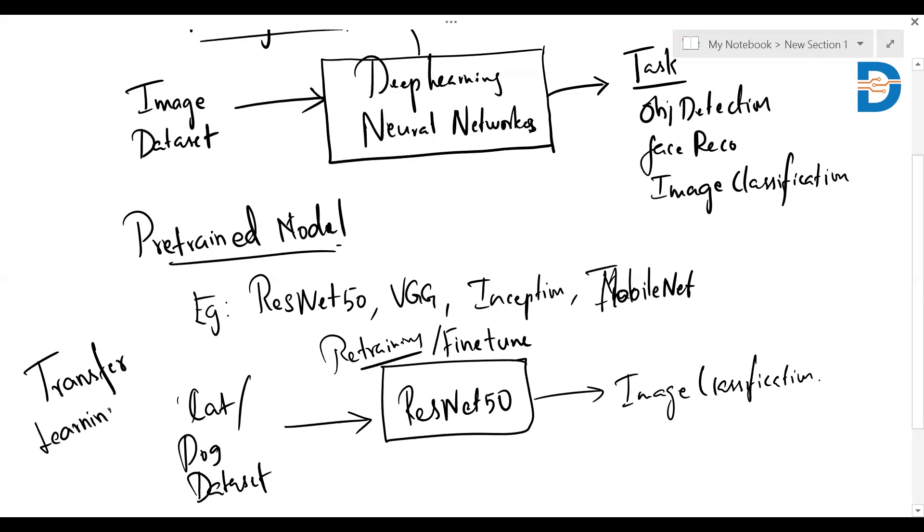So in the pre-trained model, I'm using a certain dataset and training the model again to be more specific on a certain task I'm concentrating on. This is called transfer learning. So I hope this is clear. If you have any doubts, leave it in the comment section. Thank you so much.